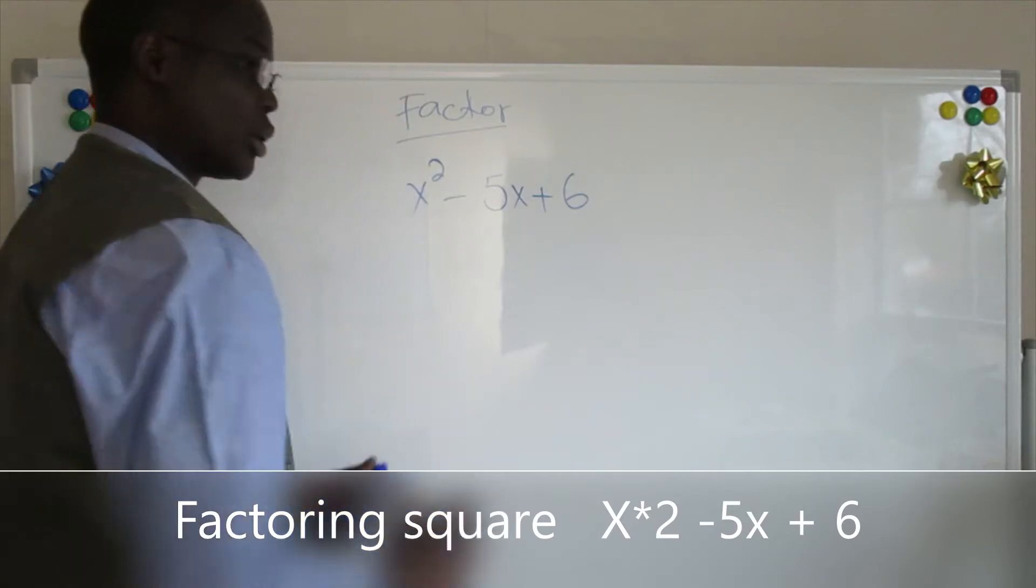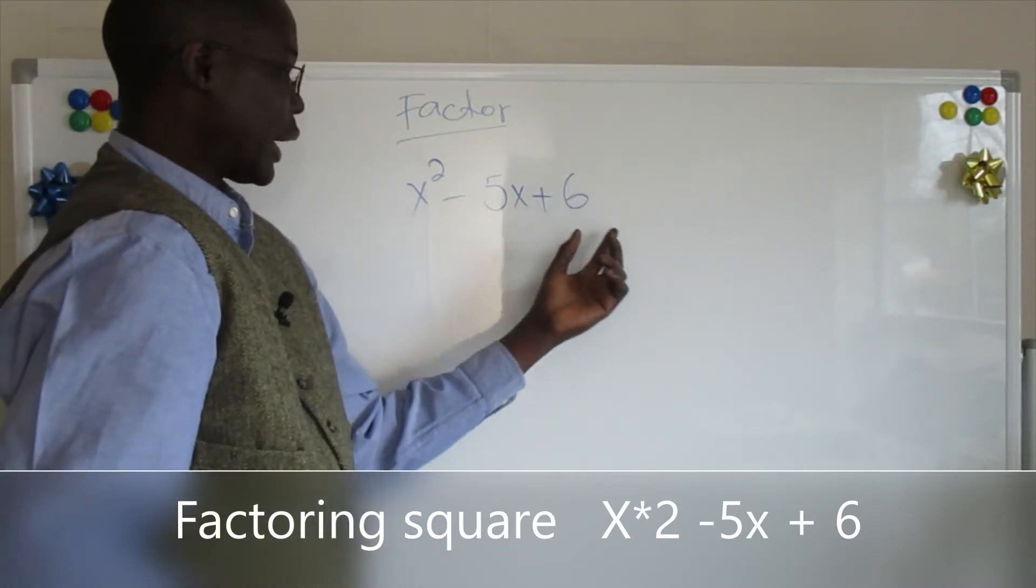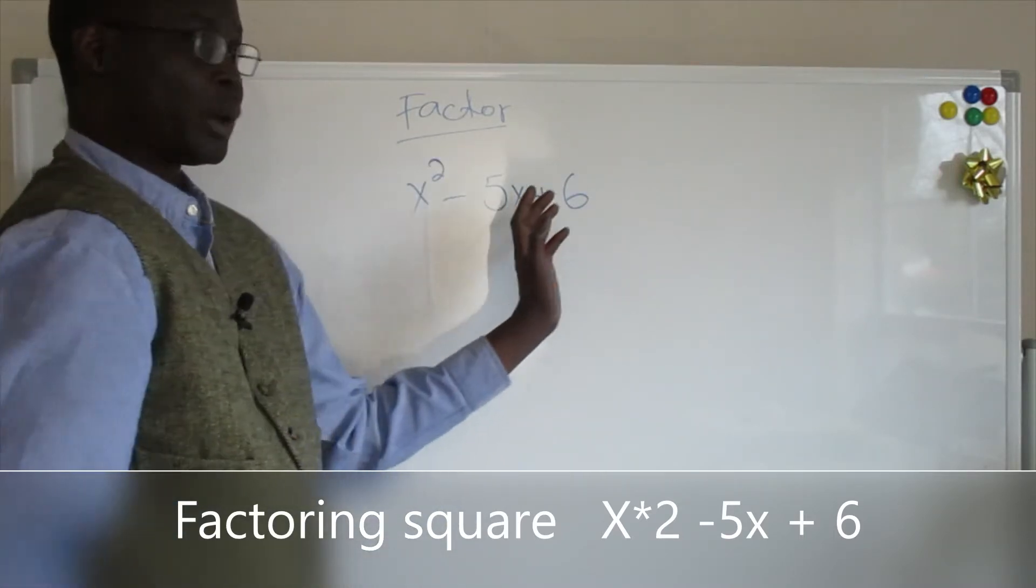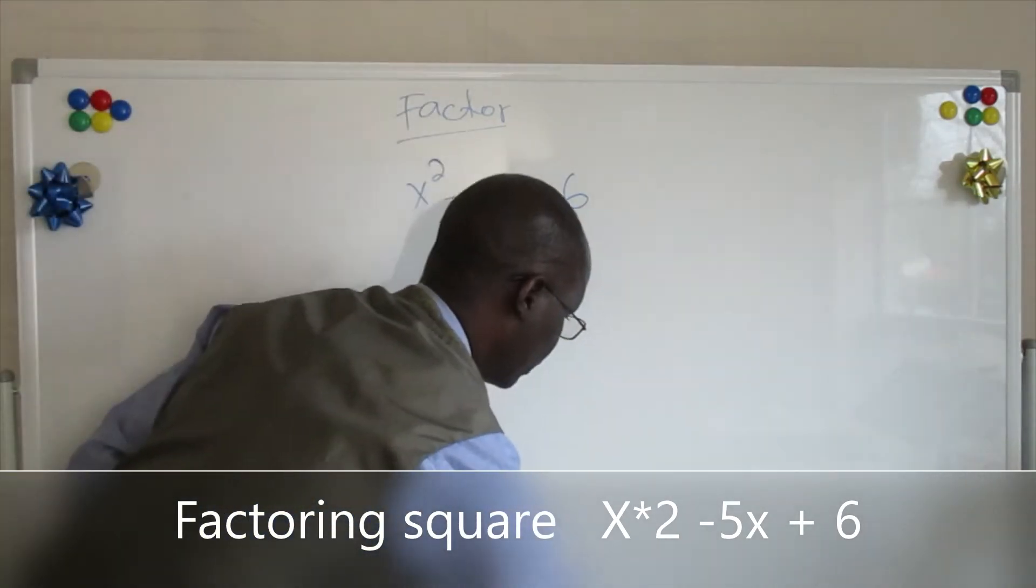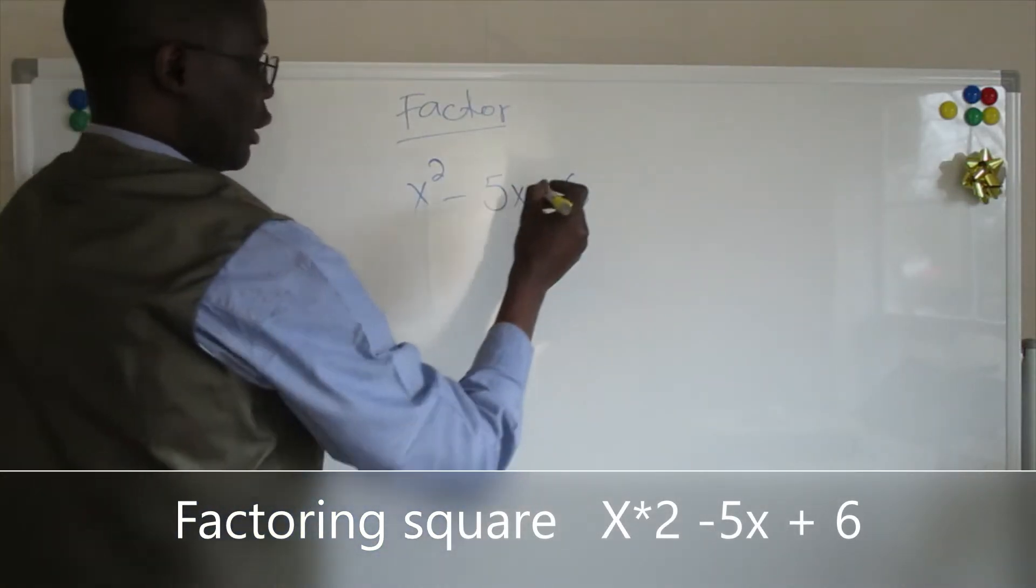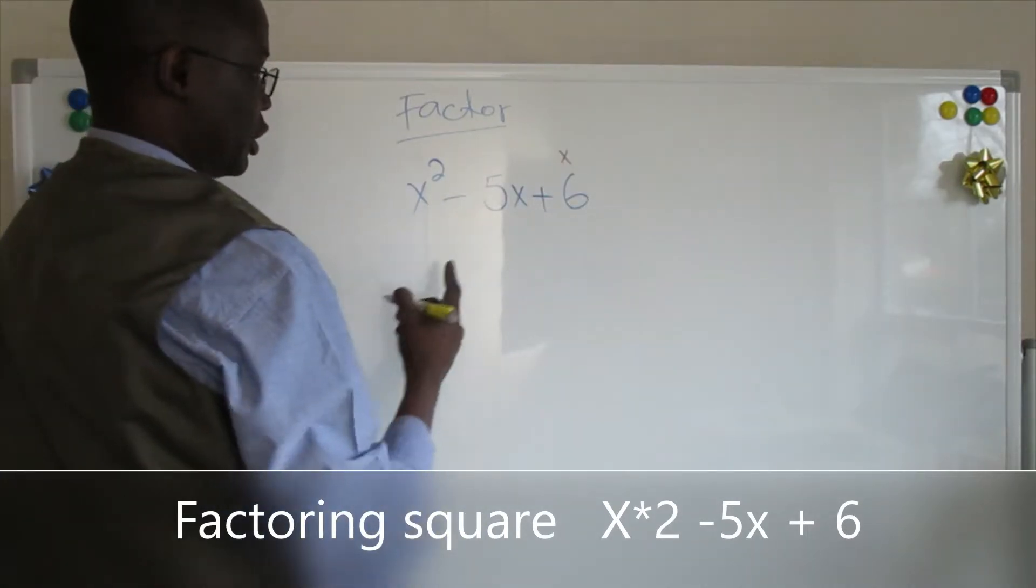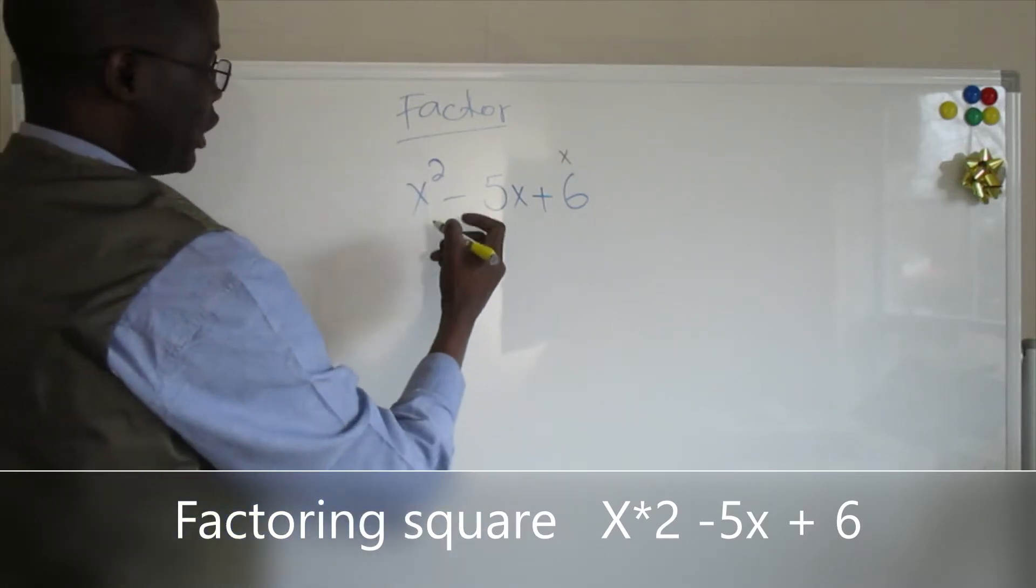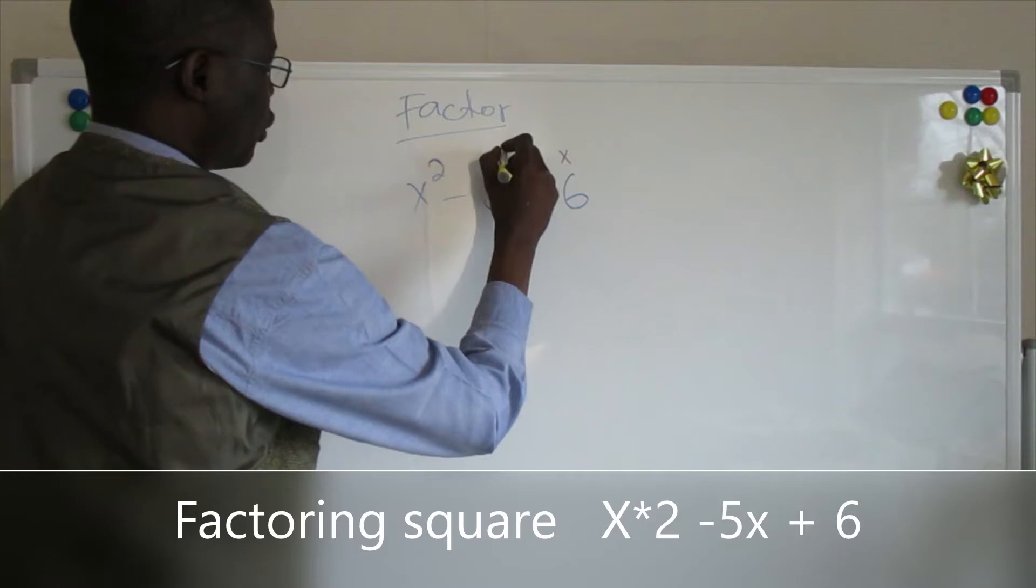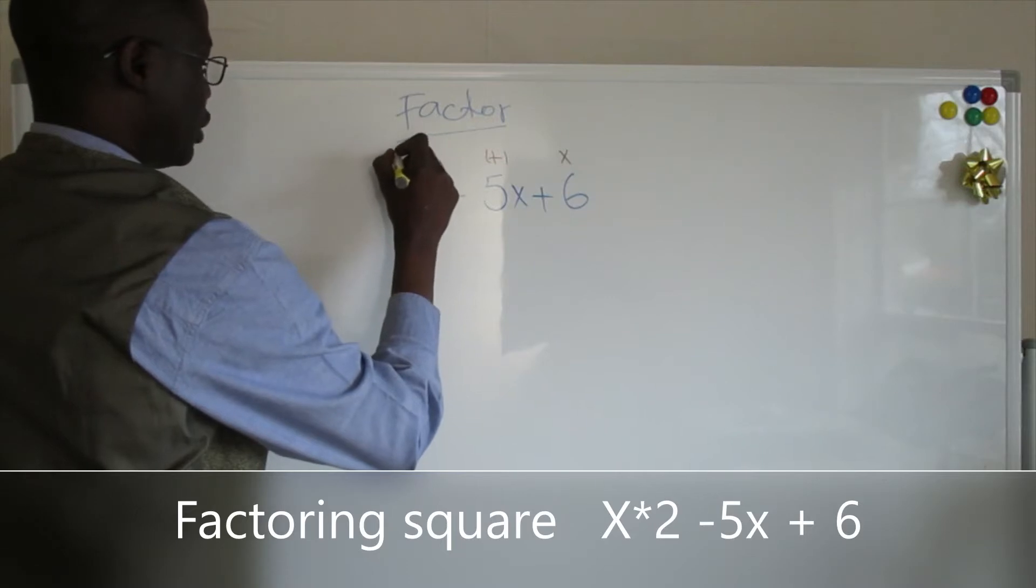The one thing you need to understand clearly is the last number here controls the answer you want to get. What I mean by that is this one is the result of multiplying two numbers that give you 6. The middle number is you combine or add two numbers. And the one here is multiplying two numbers to get here.